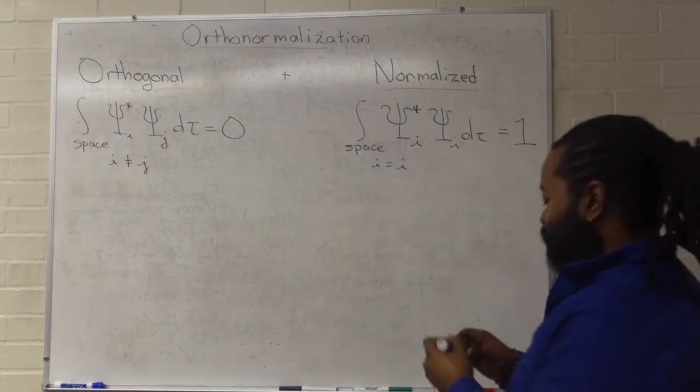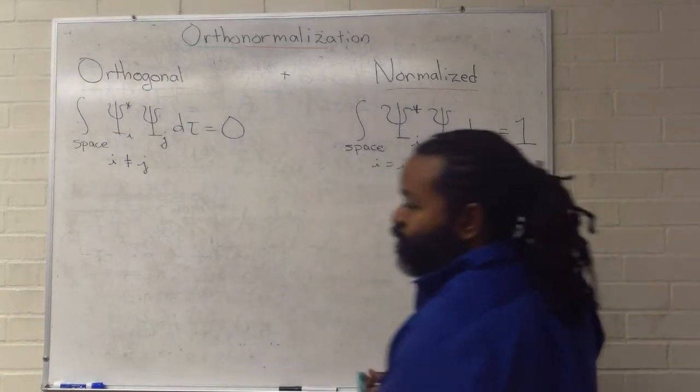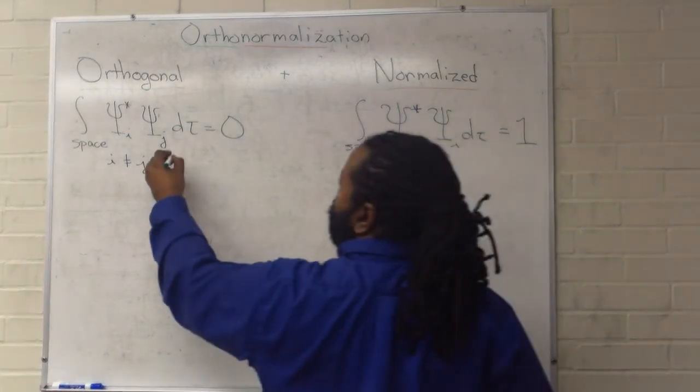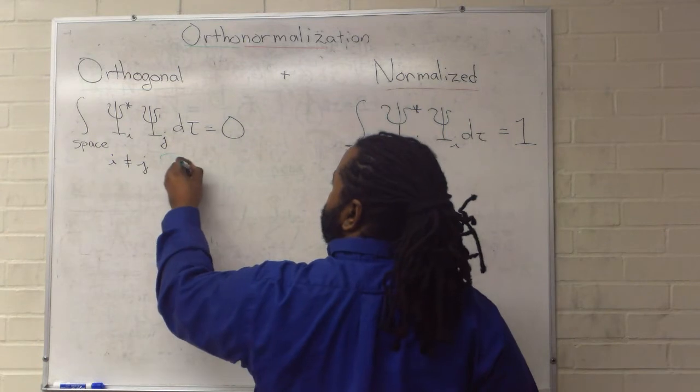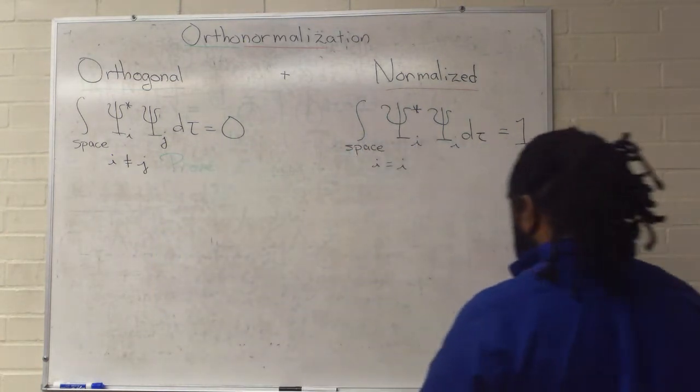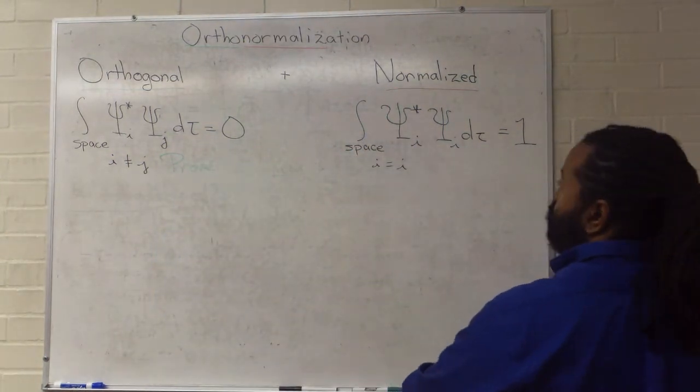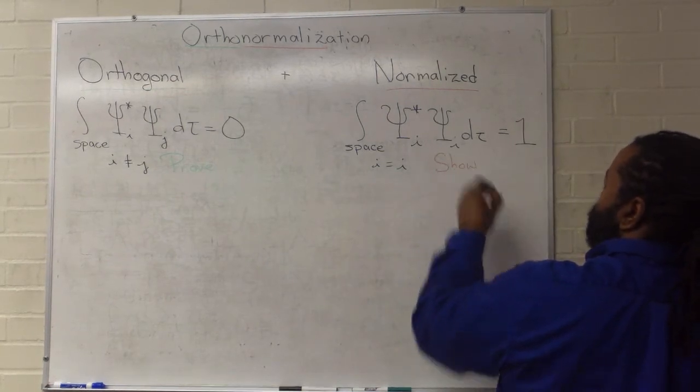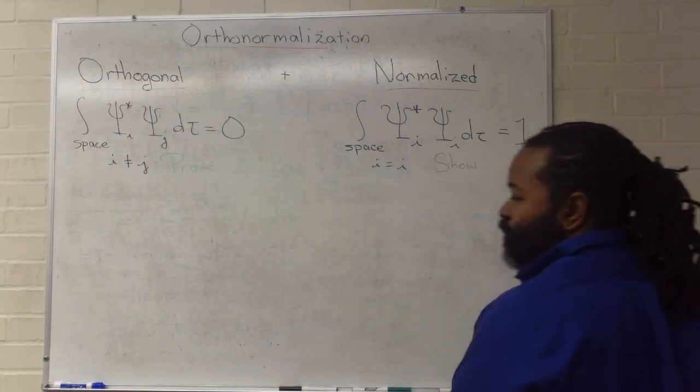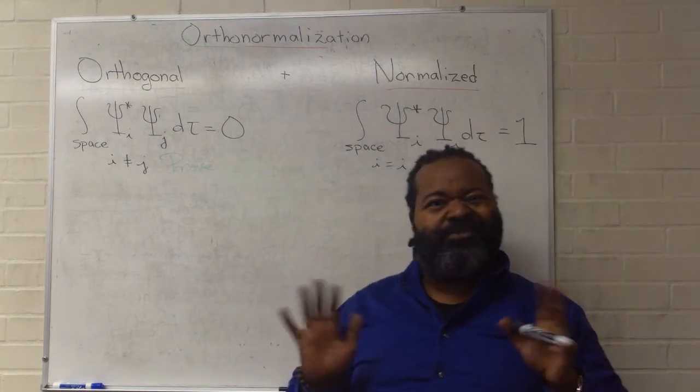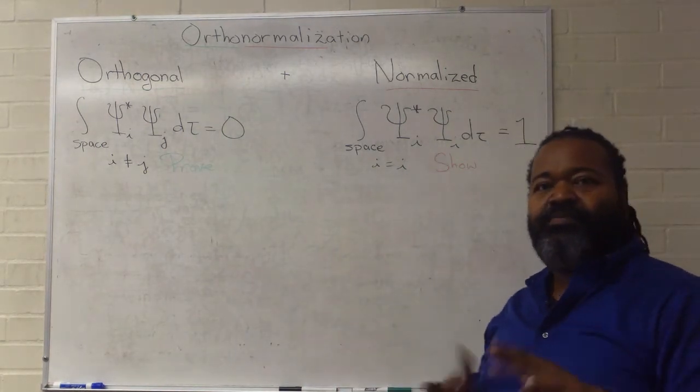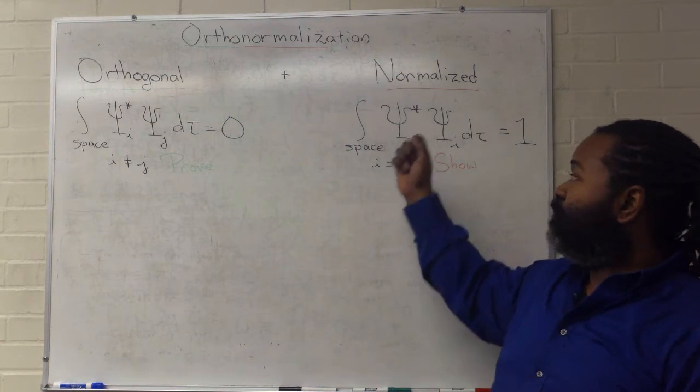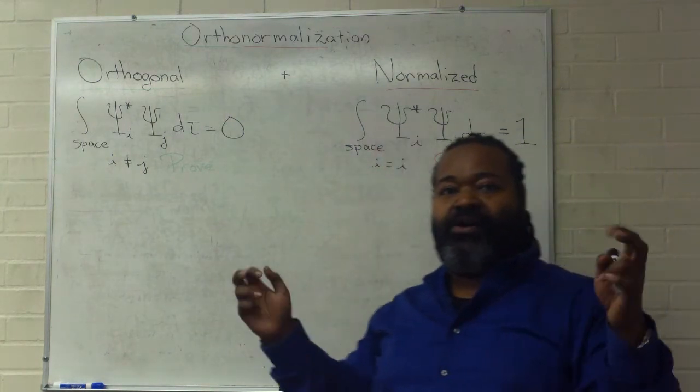So, the thing that we have to do for orthogonal, we want to prove this is true. Normalization, this is something that we have to show to be true. And so, this will result in different setups depending on the specifics of the wave function and what we mean by all space.